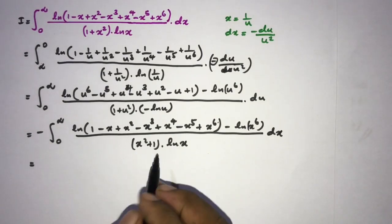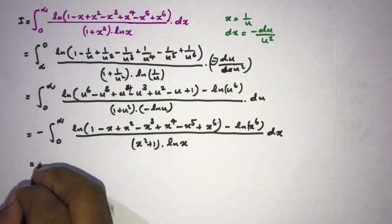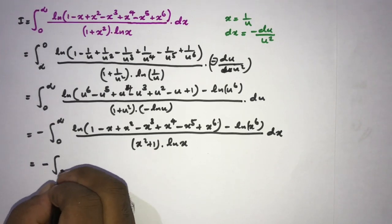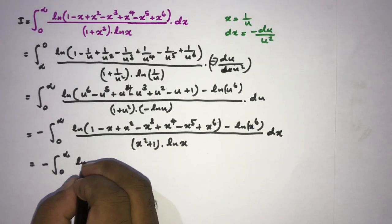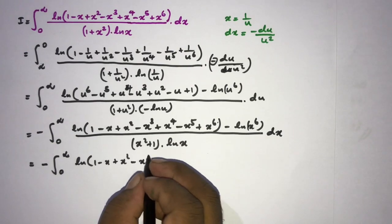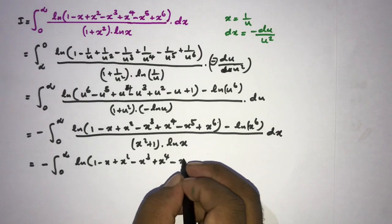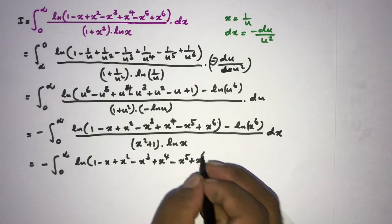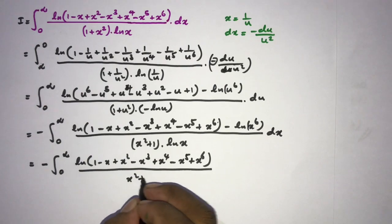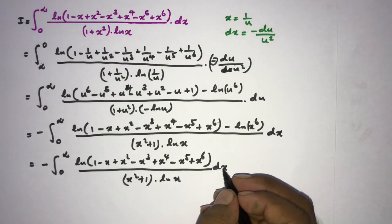We divide through by (x² + 1) times natural log of x and split the expression into two separate integrals. The first is minus the integral from 0 to infinity of natural log of 1 − x + x² − x³ + x⁴ − x⁵ + x⁶, over (x² + 1) times natural log of x, dx.